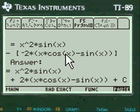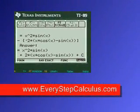And you press enter and here's the answer. x squared times sine of x plus 2 times x times cosine of x minus sine of x plus c. Pretty neat huh?